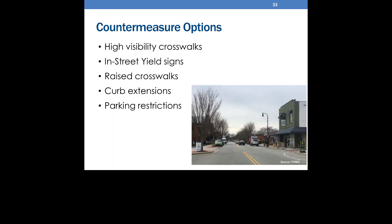By combining our conclusions from Table 1 and Table 2, we can compile a preliminary list of countermeasures to consider for enhancing an uncontrolled pedestrian crossing on our example roadway. Our countermeasures include high visibility crosswalks, in-street yield signs, raised crosswalks, curb extensions, and parking restrictions near crossings. Note these tables are only the starting point for countermeasure selection. You should also consider other components such as local policies and guidance in selecting appropriate countermeasures.